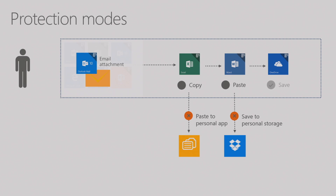When a user gets an email with an Excel attachment and tries to copy content to paste into a personal app like Twitter, it will be blocked, silently allowed, or allowed with a pop-up informing the user. They can copy to another trusted app like Word without any problem. Saving to OneDrive for Business or SharePoint would be allowed. Regarding OneDrive: the current OneDrive app is not yet an enlightened app. Around October, we'll release an update for OneDrive to make it behave better in a Windows Information Protection environment.